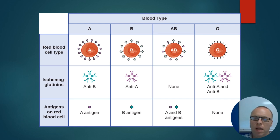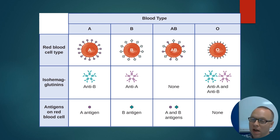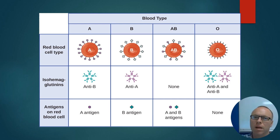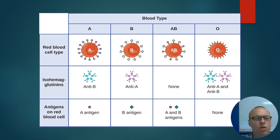Type AB — since you have both A and B antigens, pretend you already have both hepatitis A and B. You're okay getting blood from type A, type B, type AB, and type O — none of those add anything you don't already have. Type O — since you have no antigens, you don't want any 'infections.' You're not okay getting blood from type A, type B, or type AB. The only blood you're okay with is from another type O donor who has no antigens either.